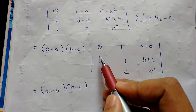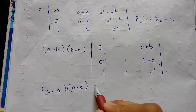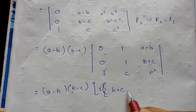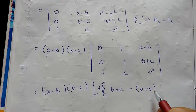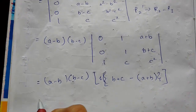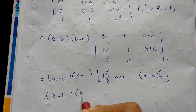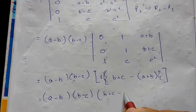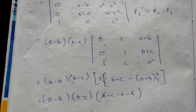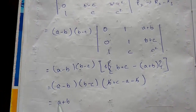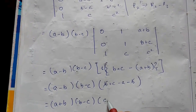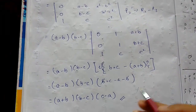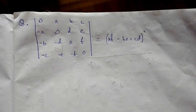Expanding the determinant, we take coefficient 1 times (b plus c) minus (a plus b). This gives (a minus b)(b minus c) times (b plus c minus a minus b). The two b's cancel, giving (a minus b)(b minus c)(c minus a), which is exactly what we had to prove.